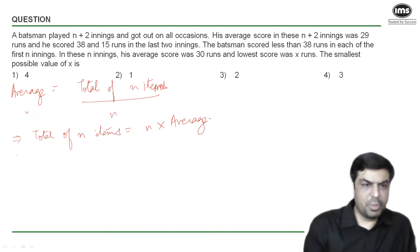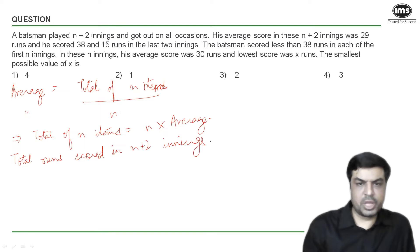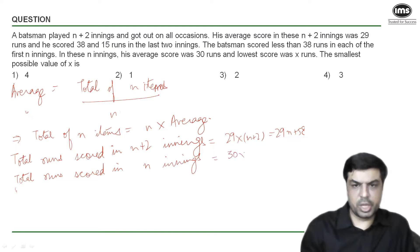So what will be the total runs scored by the batsman in n plus 2 innings? Number of innings is n plus 2, average is given as 29. So it is 29 times n plus 2 which is 29n plus 58. Similarly what is the total runs scored by the batsman in n innings? After n innings his average was 30, so it is nothing but 30 into n that is 30n.